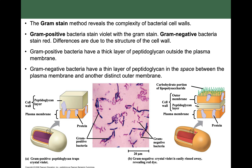Gram-negative bacteria do have a cell wall, but it's a thin layer sandwiched between an inner and an outer membrane, so they only take up one of the two stains and appear a lighter pink color. By performing the gram stain, you can determine the cell wall structure — specifically whether the bacteria has an outer membrane or not. This is useful clinically because there are certain antibiotics you might use to treat gram-positive bacteria that you wouldn't use to treat gram-negative bacteria, so knowing what you're dealing with is very important in a medical setting.